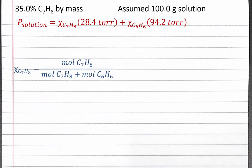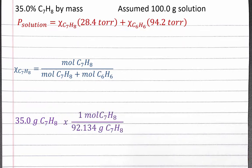To calculate mole fraction, we need the moles of toluene and benzene in 100 grams of solution. Since the solution is 35% toluene by mass, we know we have 35 grams of toluene in 100 grams of solution. We can convert from grams of toluene into moles using the molar mass of toluene, and we should get 0.3799 moles of toluene in 100 grams of solution.